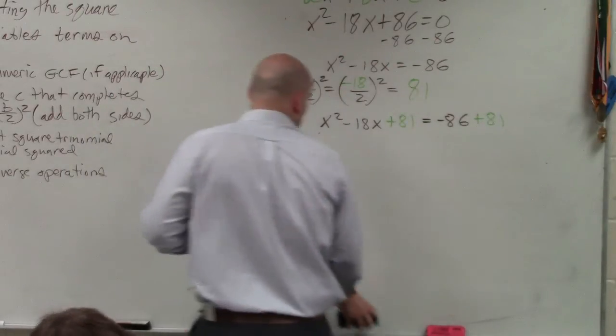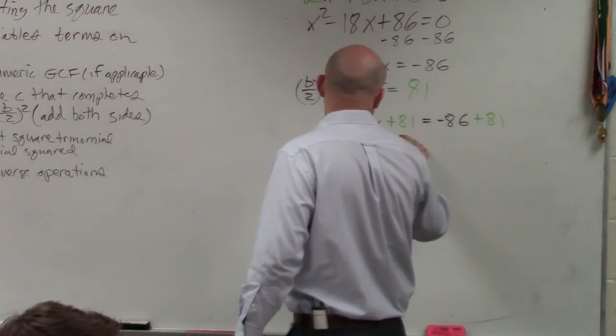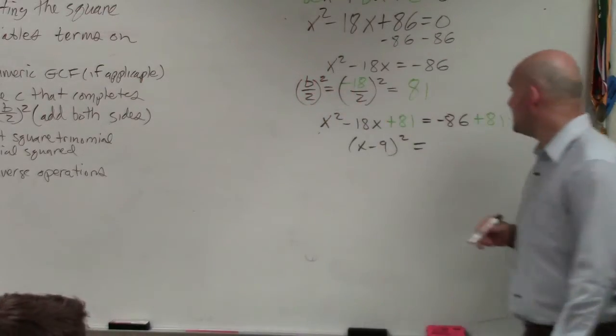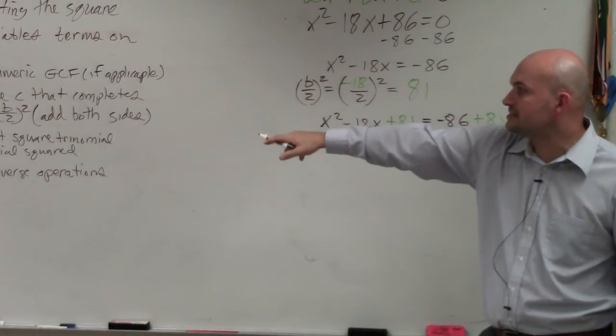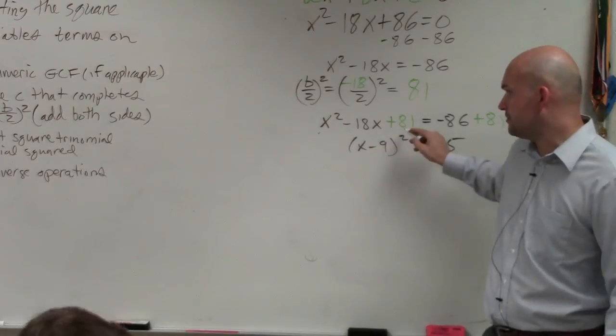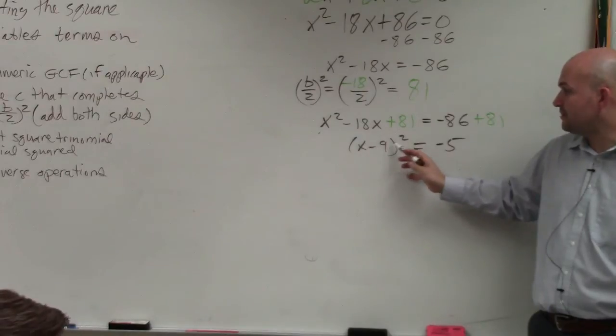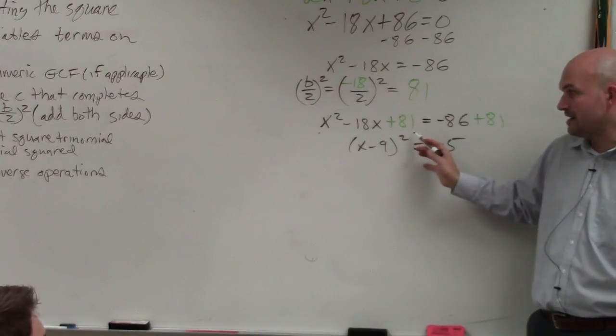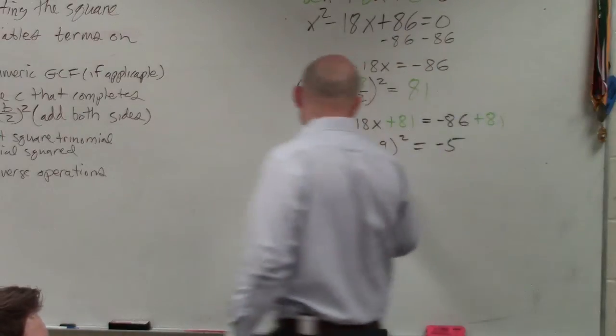So rather than writing x minus 9 times x minus 9, we will write x minus 9 squared equals negative 86 plus 81, which is going to be negative 5. Then the last thing is I factored this to my binomial squared. This is a binomial squared. Then I solve using inverse operations. So I have my x being subtracted by 9 and it's being squared. Before I can undo subtracting 9, I've got to undo the squaring. So I take the square root.